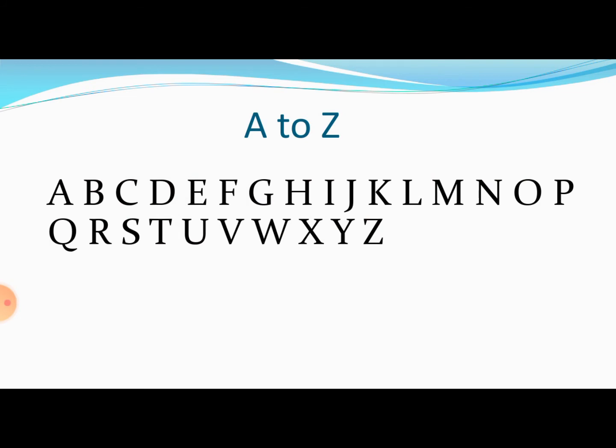Means, agar hum ek ki baat karein to alphabet hai. Agar bhos sara hai toh alphabets hote hain. Toh inhī sabhi letters ko alphabet karte hain. Toh hum sab jante hain — alphabets hamare kitne hote hain? 26 hote hain.